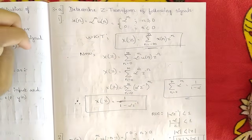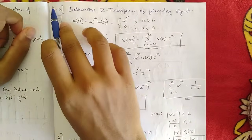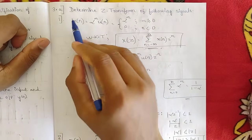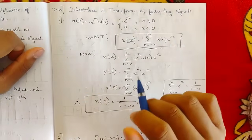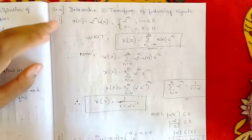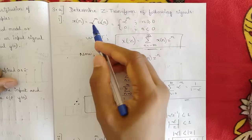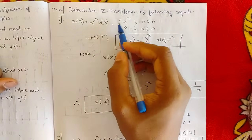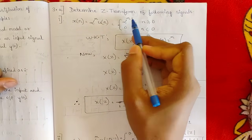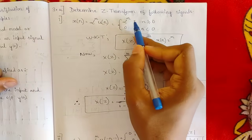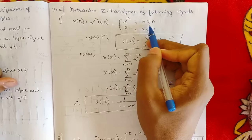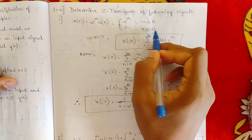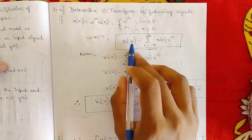Let us start with question 3a from Module 2. The first question: determine the Z transform of the following signals. They have mentioned two sub-questions. First: x[n] = α^n · u[n], where it is defined as α^n for n greater than or equal to zero, and zero for all values of n less than zero.